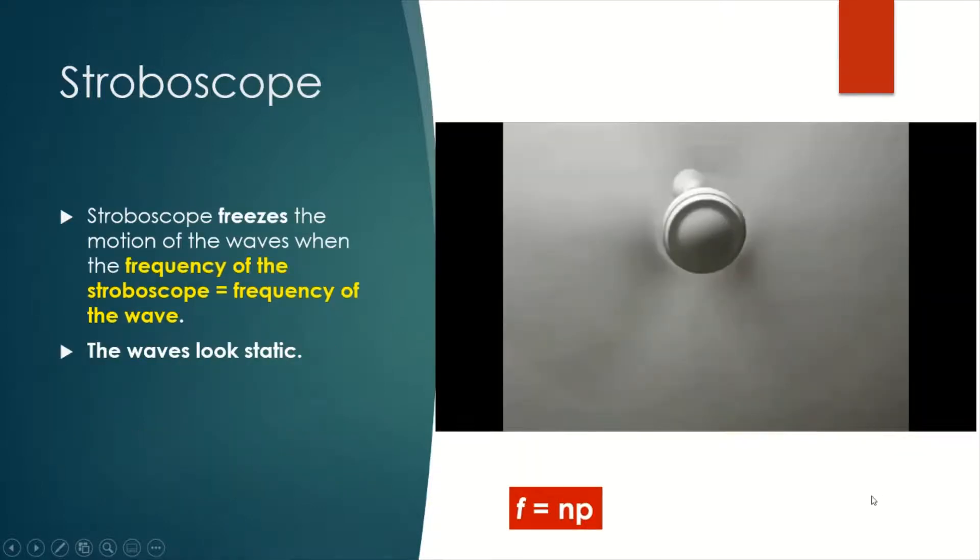Let's view this video to see how stroboscope is used to freeze the motion of a moving object. This is a fan that is spinning.